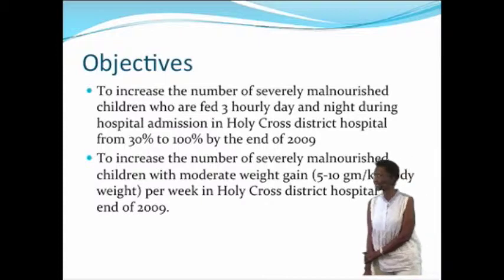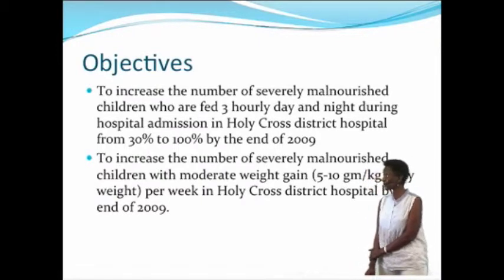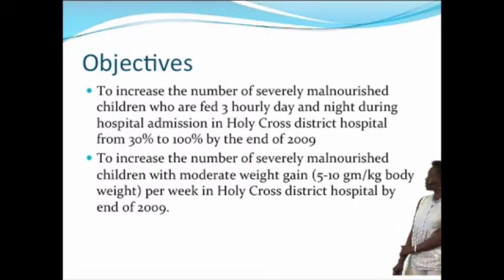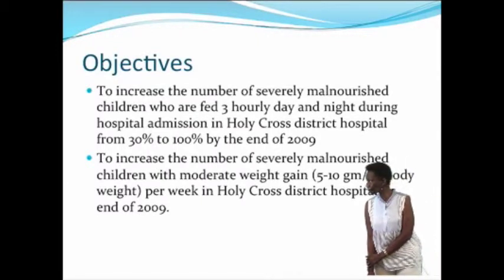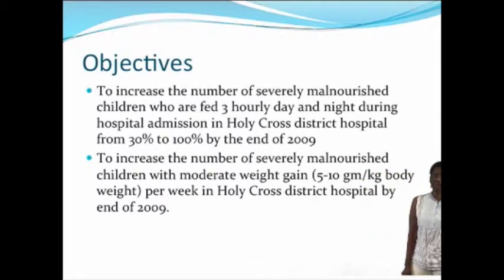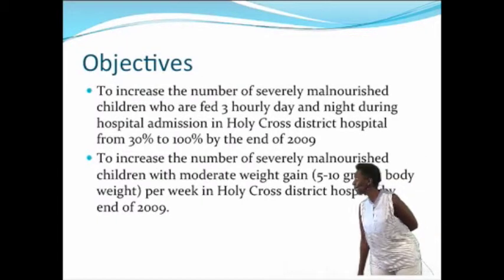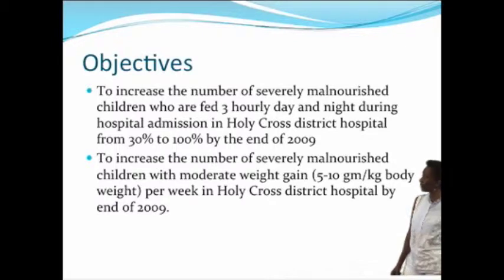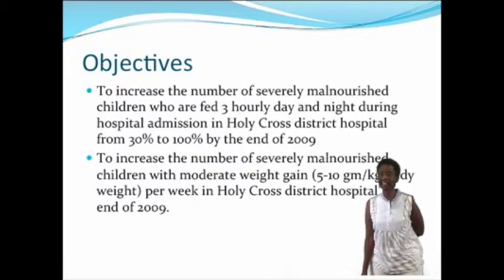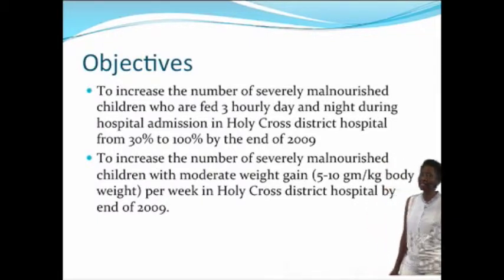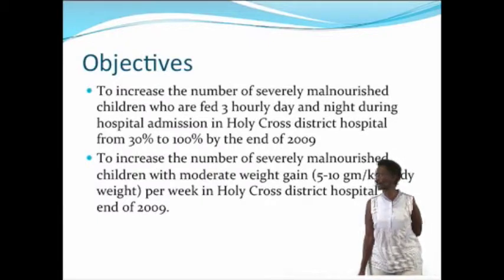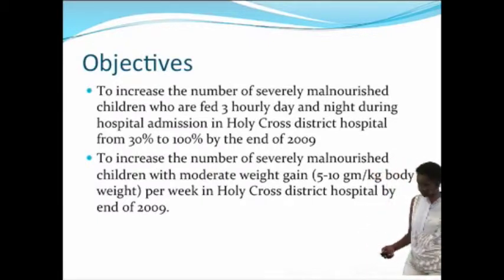Another example of an objective is to increase the number of severely malnourished children with moderate weight gain. You have to define what moderate weight gain means so that everybody has the same understanding. In this case, moderate weight gain is 5 to 10 grams per kilogram body weight per week — this is specific enough so that anyone determining whether children are gaining weight will know exactly what you mean. The objective is also time-bound in Holy Cross District Hospital by the end of 2009.